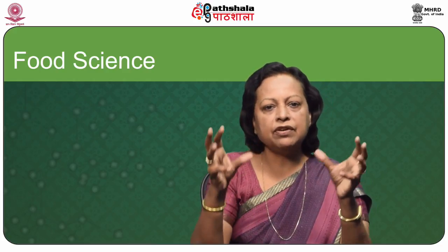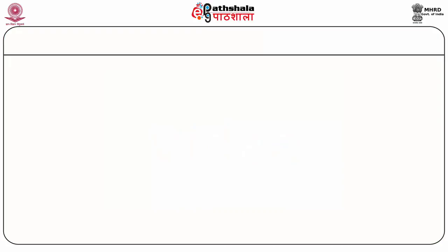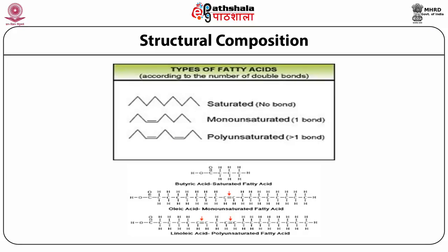On the screen you can see different types of fatty acids shown according to the number of double bonds. The first figure is of saturated fatty acid, which has no double bond. The second is monounsaturated fatty acid with one double bond, and polyunsaturated fatty acid has more than one bond — two bonds are shown in the figure. The example of saturated fatty acid with no bond is butyric acid; the example of monounsaturated is oleic acid; and the example of polyunsaturated with two bonds is linoleic acid.